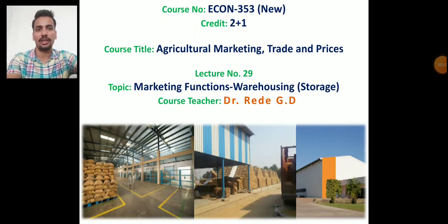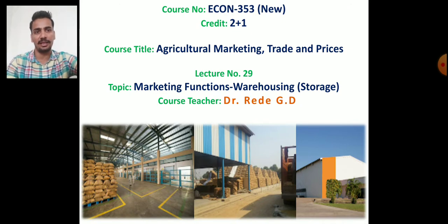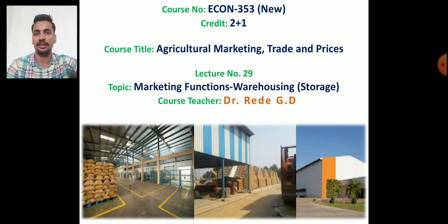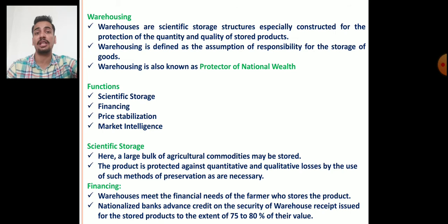Good morning students, welcome to our 29th lecture of ECON 353, that is Agricultural Marketing, Trade and Prices. In the last lecture we saw the marketing function of storage. Today we will see the marketing function of warehousing, which is related to the storage of agricultural commodities.